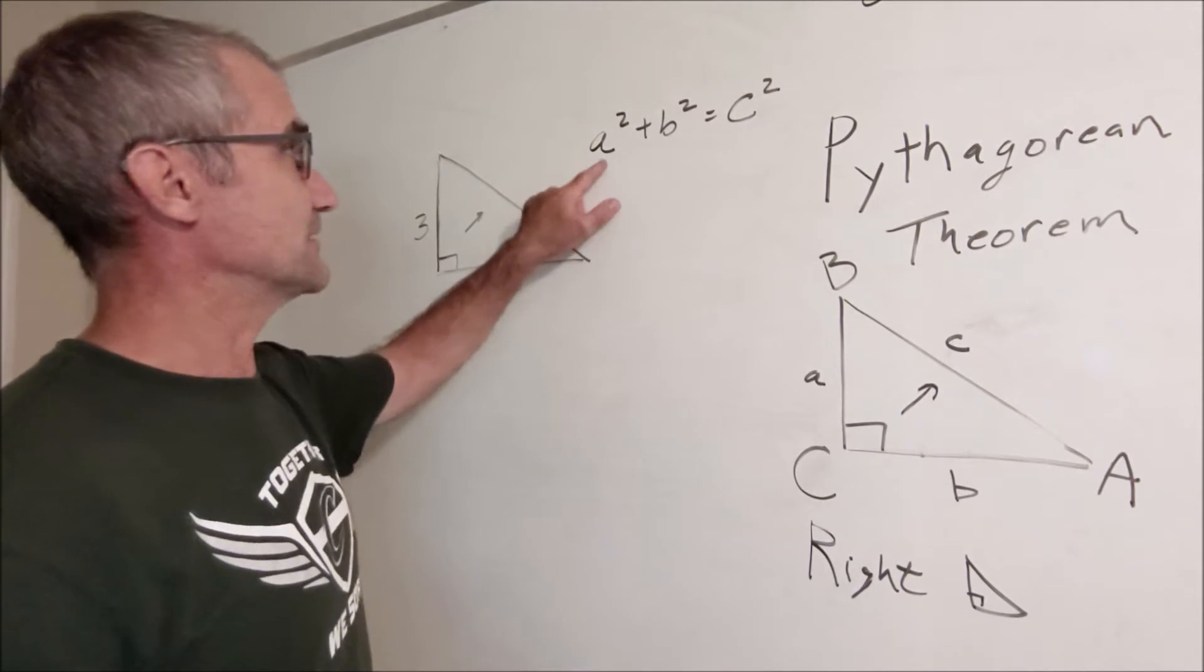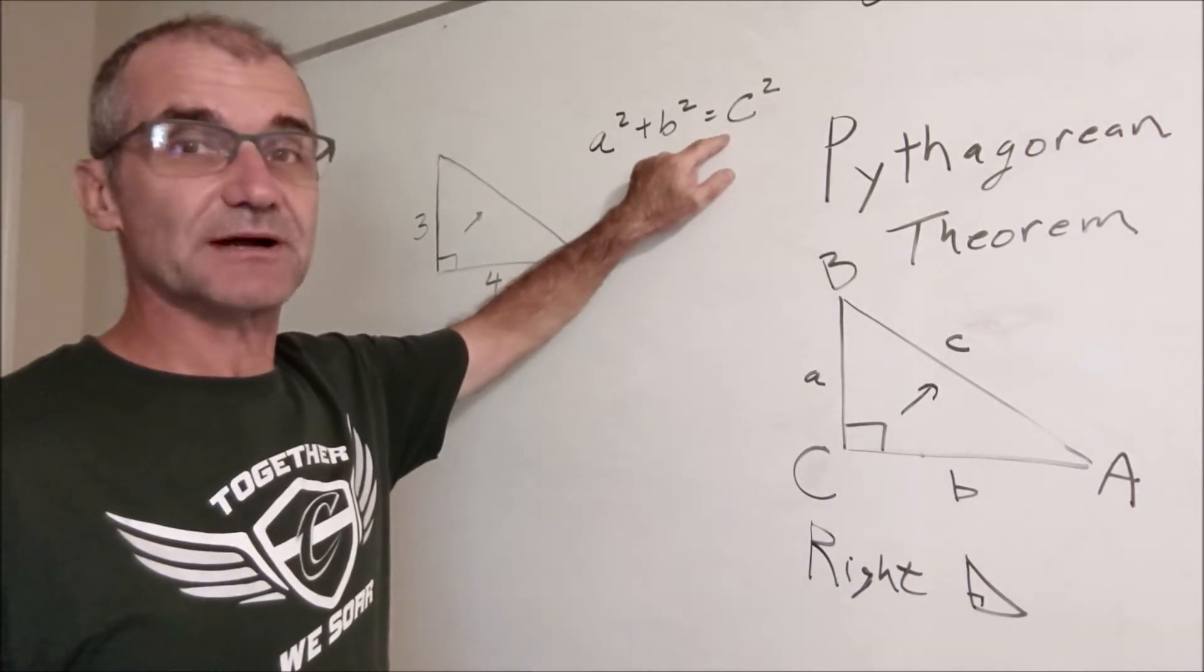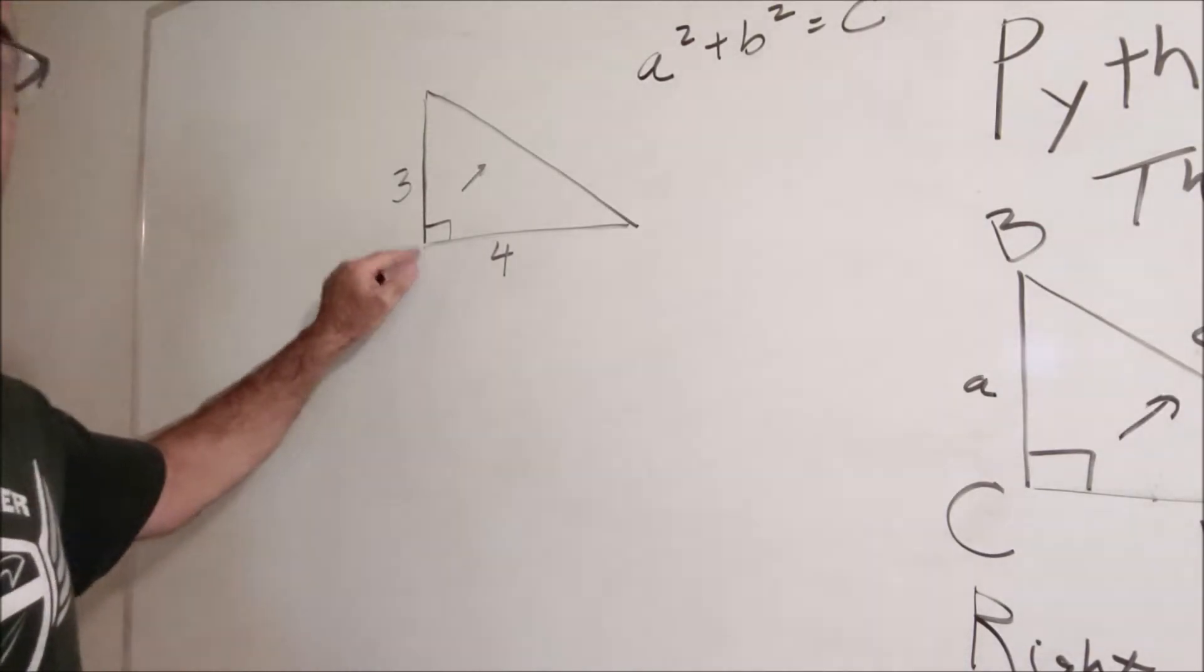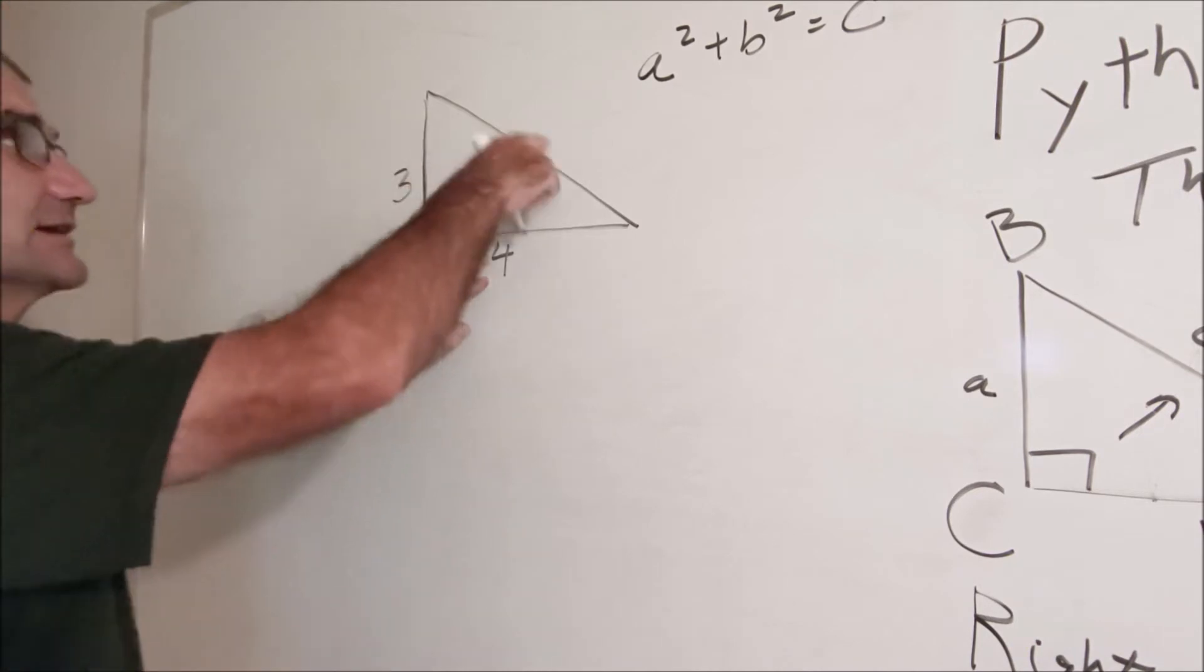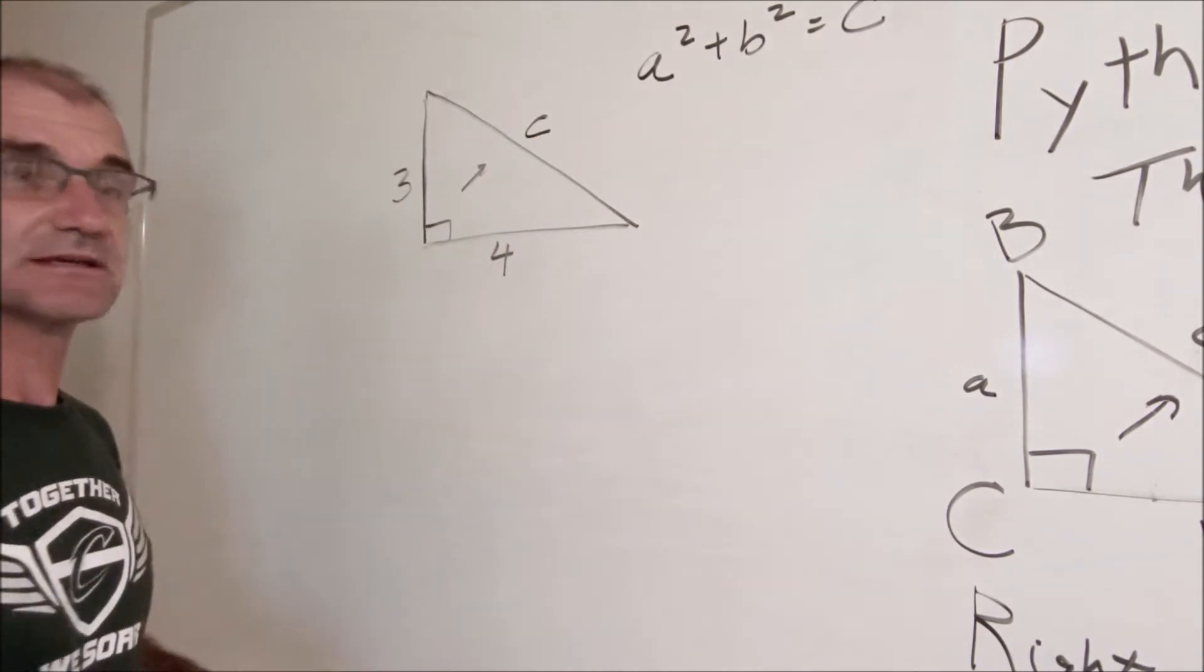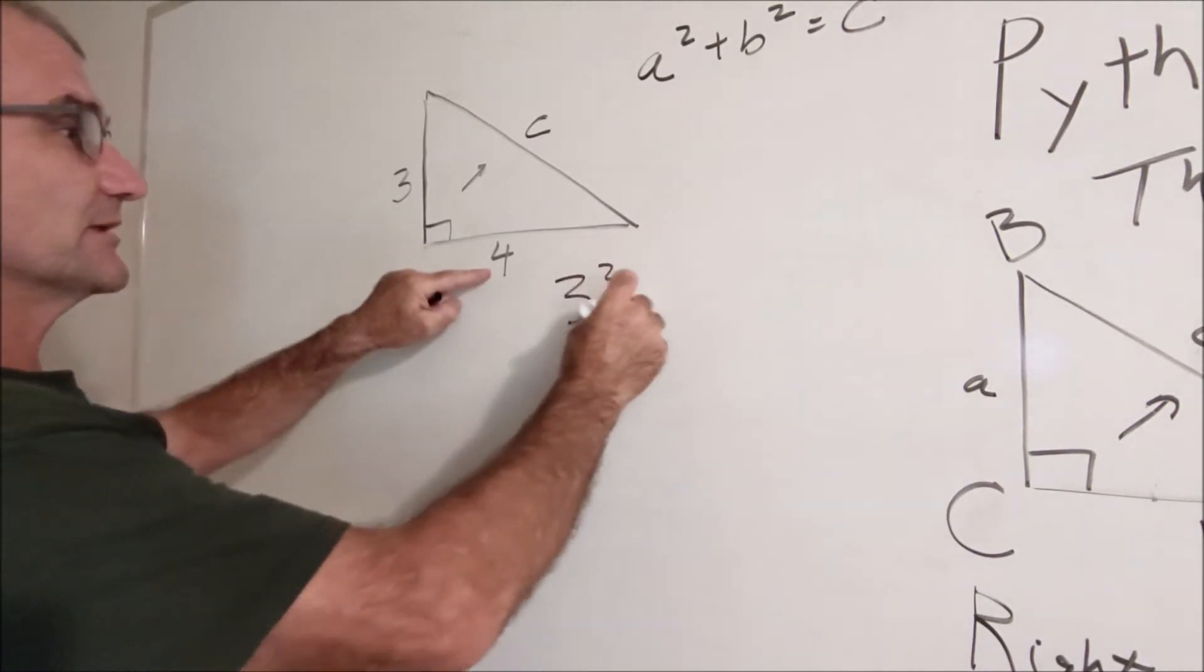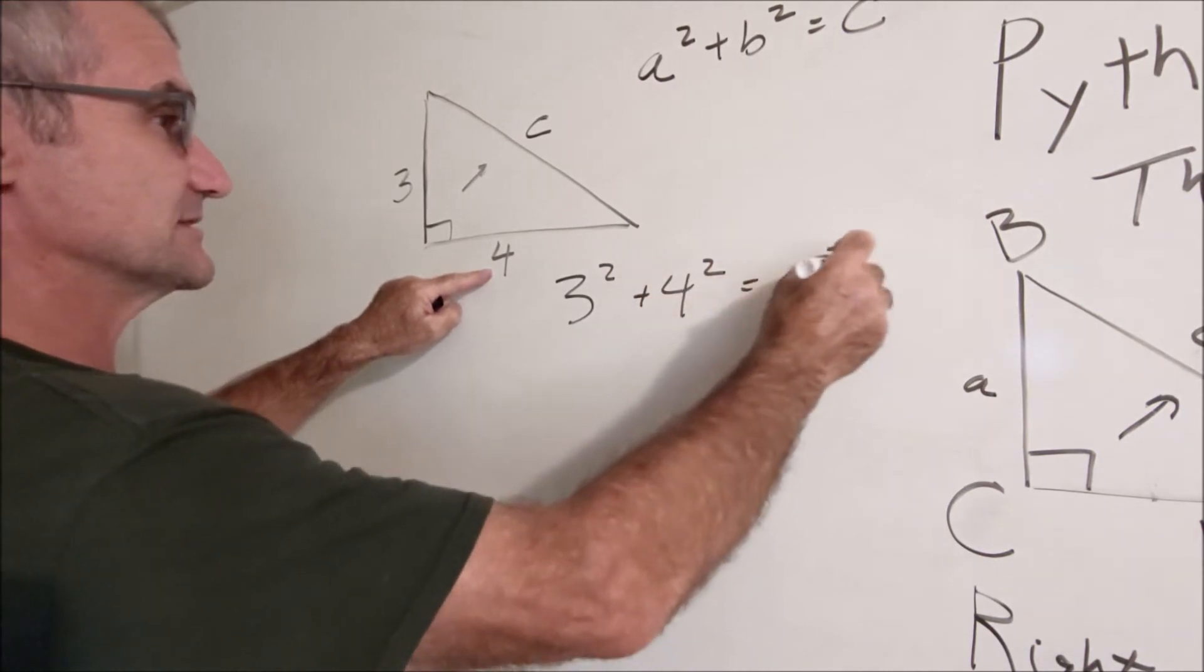The important thing to note is it has to be a leg, a leg equal to hypotenuse squared. Here's an example here. I have a triangle that has a leg of three, a leg of four, and I want to find this hypotenuse, I'll call it c. So that says three squared, one leg, plus four squared, the other leg, is equal to c squared.